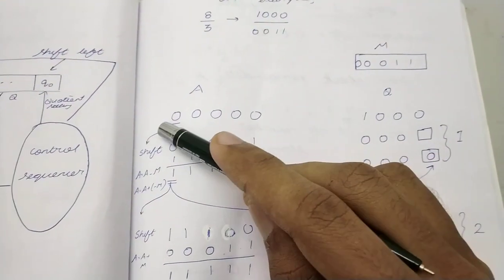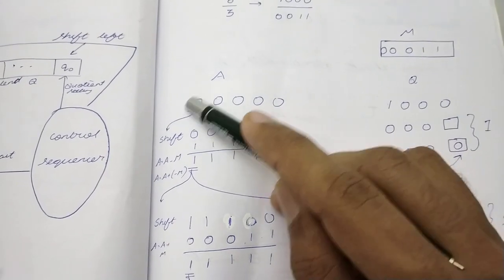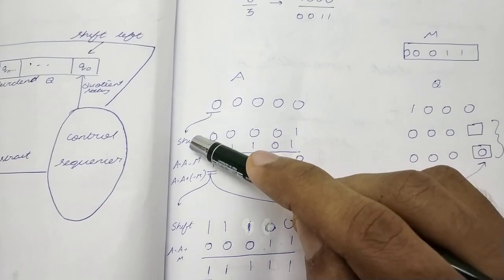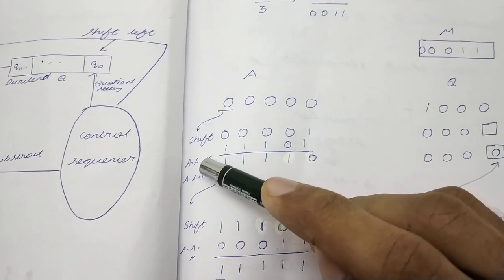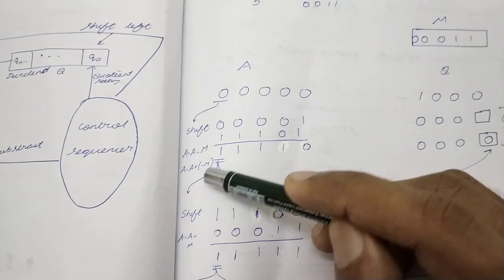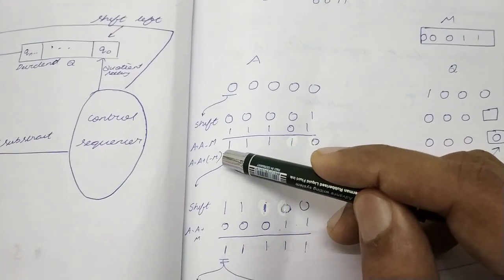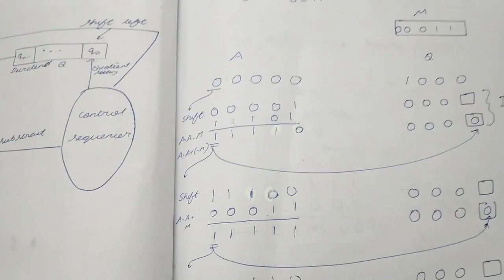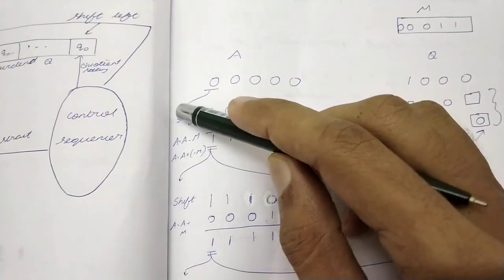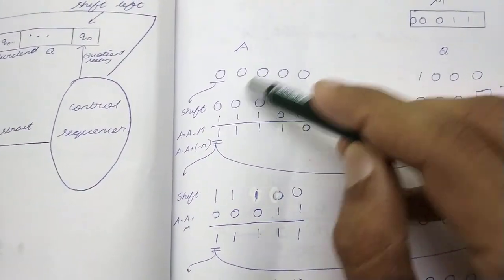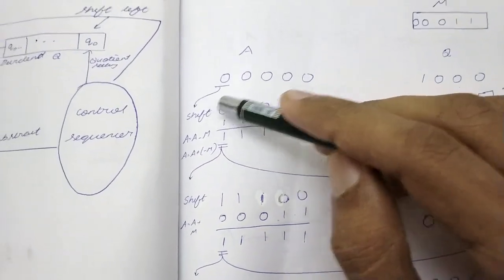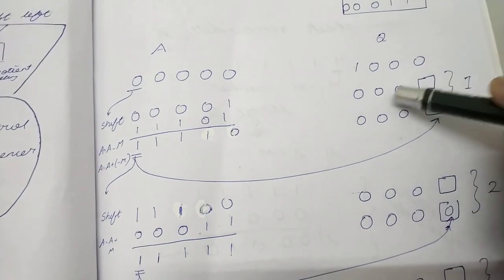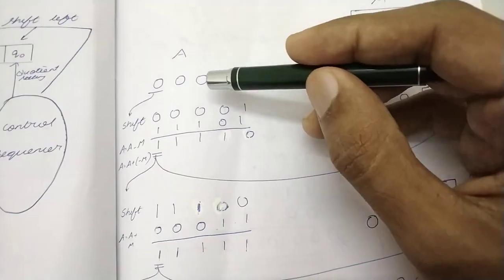The first thing we do is check the first bit of the A register. It comes out as 0. When it is 0, we first shift left and then subtract A minus M. The shift is a left shift. After shifting, A becomes 00000 and the MSB of Q (which is 1) shifts into the vacated space, giving Q as 1000 with a vacant LSB created.